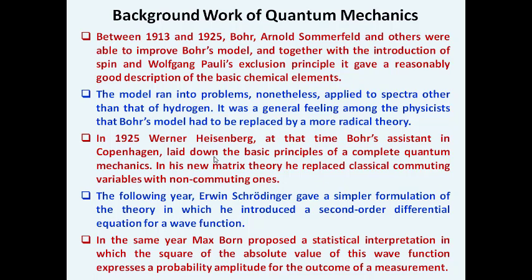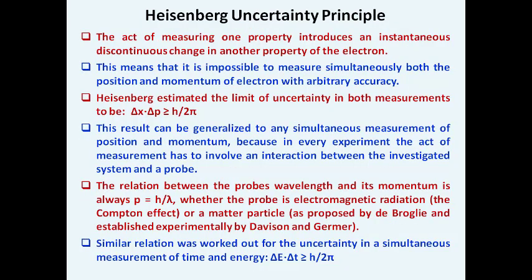On the same year, Max Born proposed a statistical interpretation in which the square of the absolute value of the wave function expresses the probability amplitude for the outcome of a measurement. These are the background of how the development of quantum mechanics happened during the period of 1900 to 1930s, and further improvements continued from there.